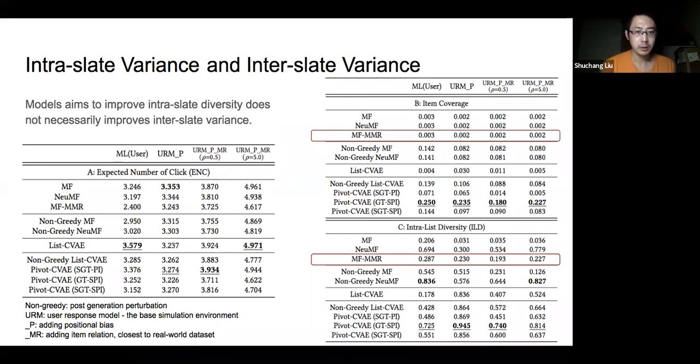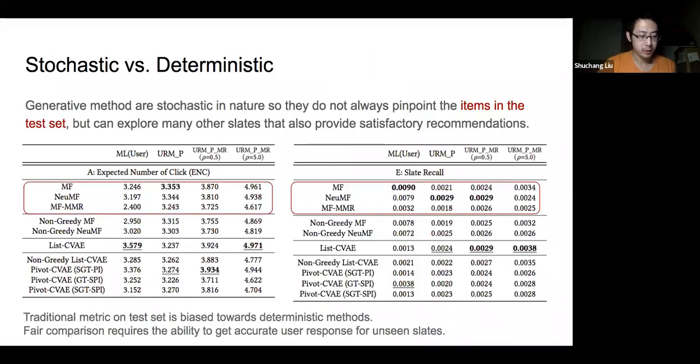In terms of comparison on the test set, we noticed that stochastic models do not always pinpoint the items in the test set, different from that in a simulation environment. And thus, this will let the generative model perform worse on traditional metrics that only depend on the test data.